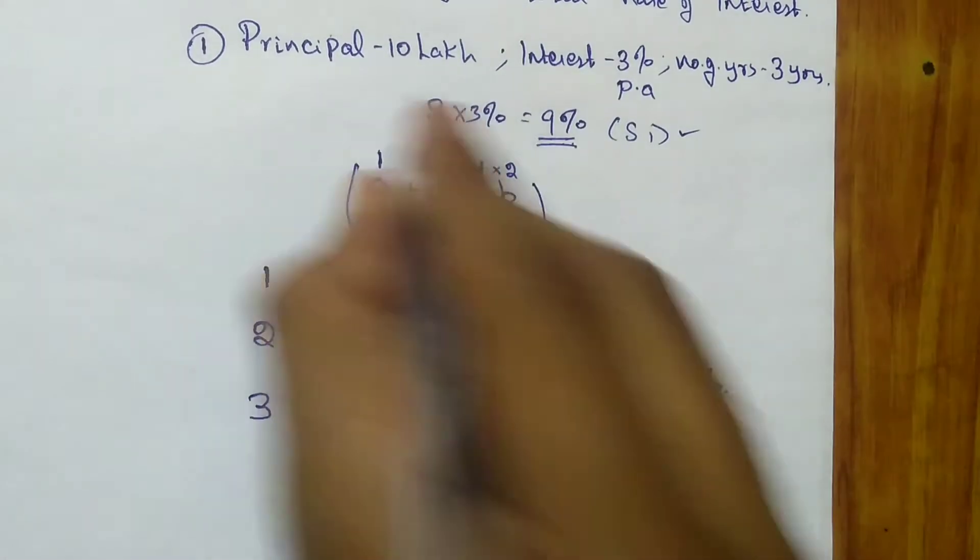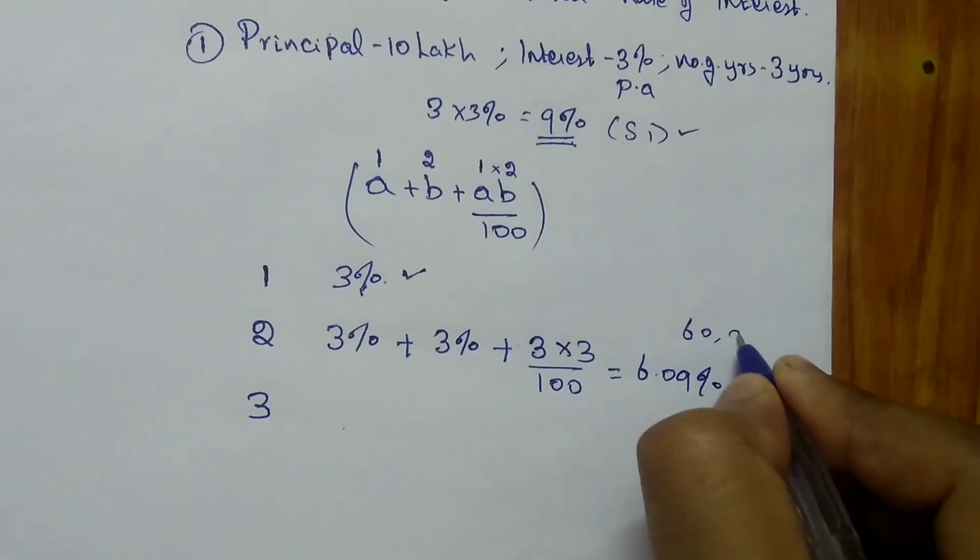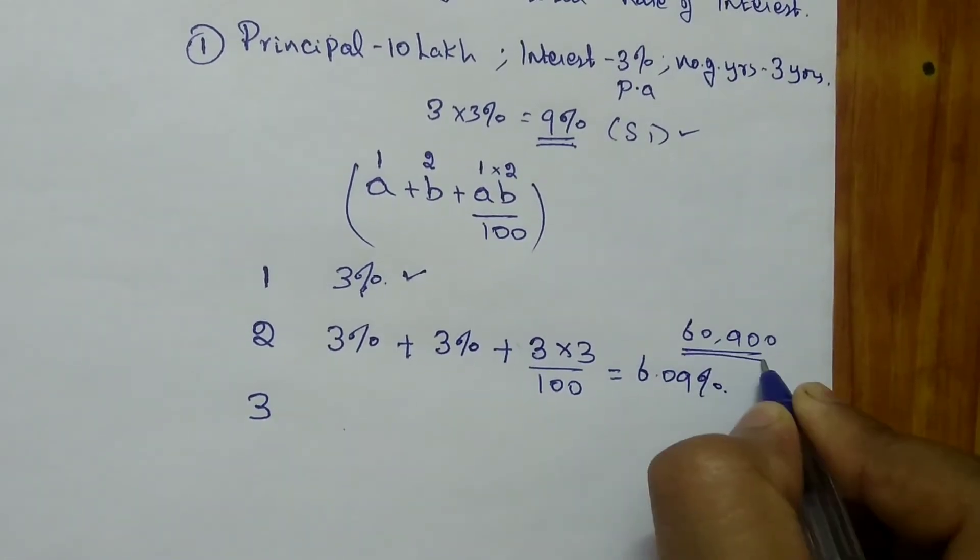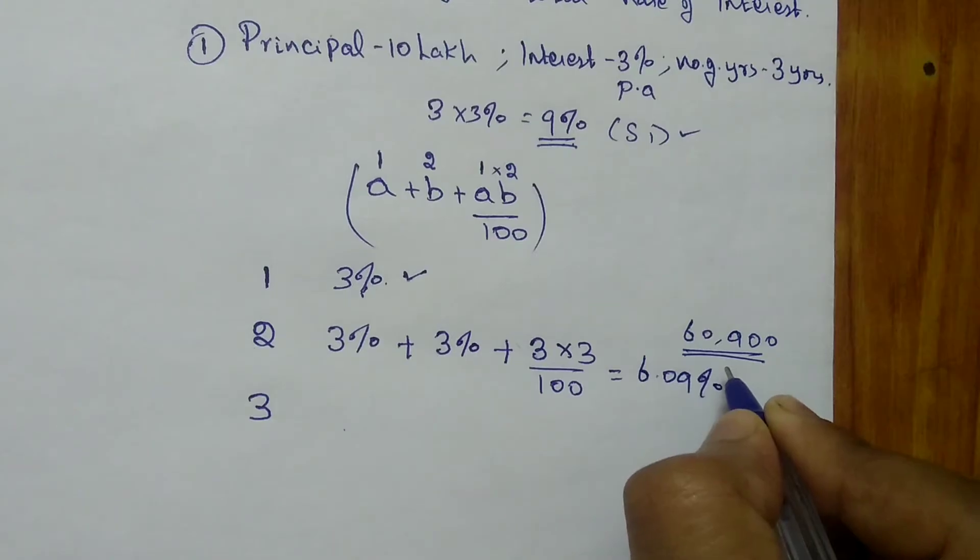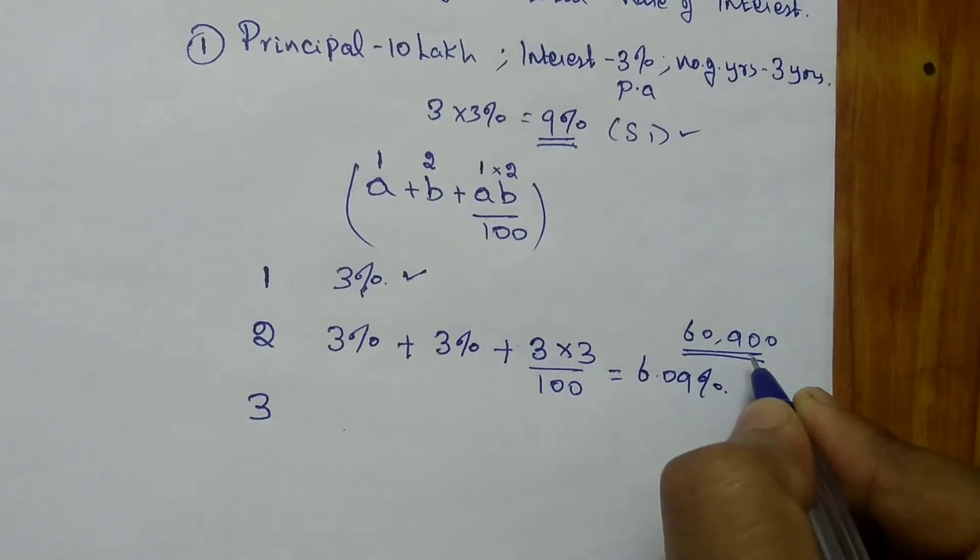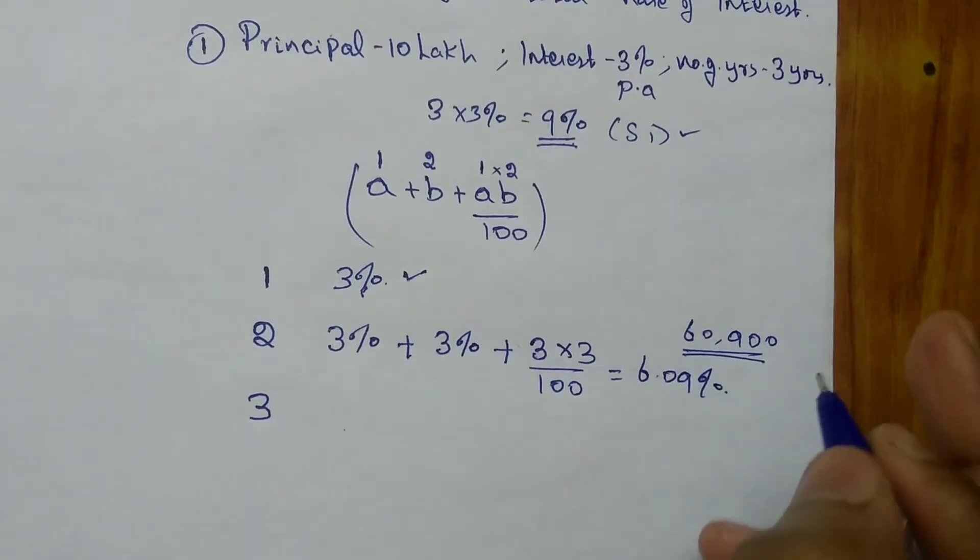So 6.09% of 10 lakhs gives you 60,900. So in compound interest, at the end of 2 years, you have to pay 60,900. But you are not settling the 60,900 at the end of 2 years.